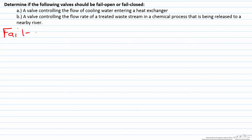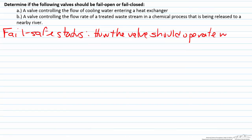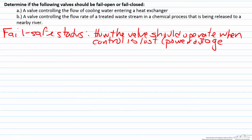The fail safe status represents how the valve should operate when control is lost. Typically control will be lost when there is a power outage or something similar. A good way to think about it is: if you lose power, how do you want your valve to operate? This is dictated solely by your process.